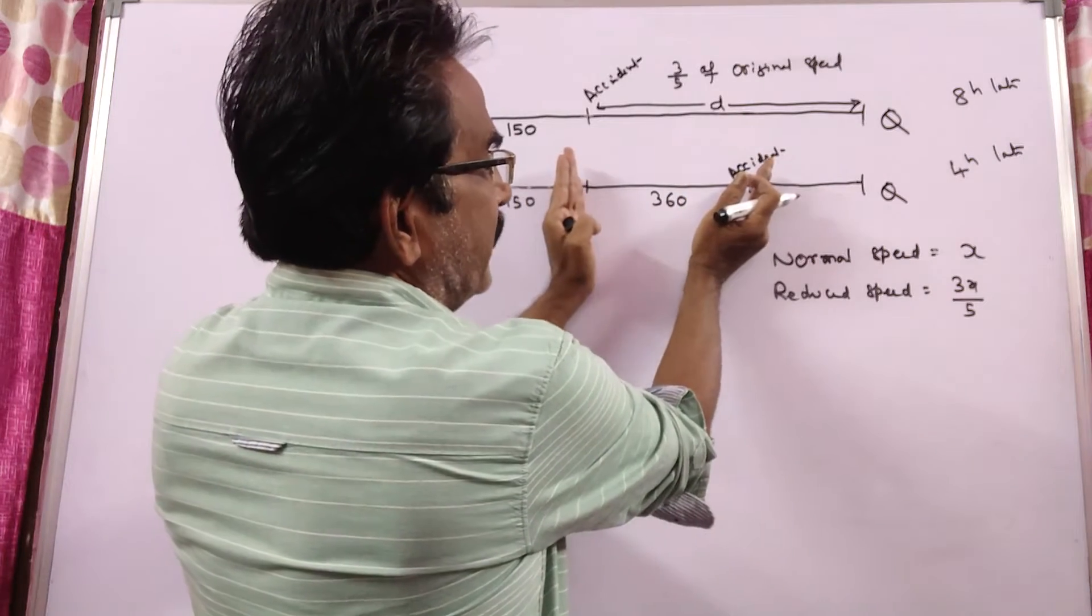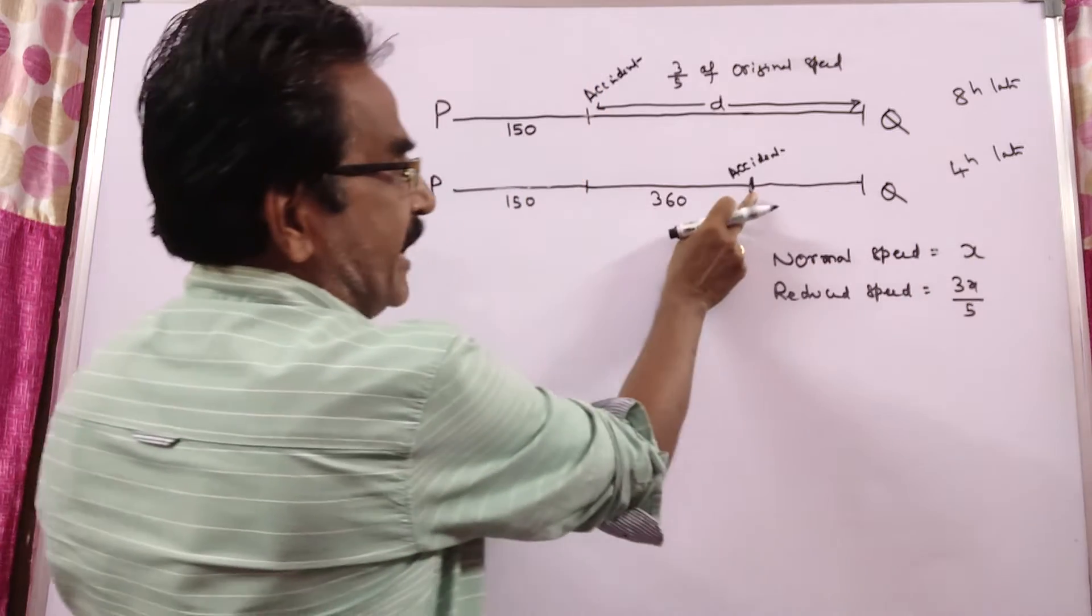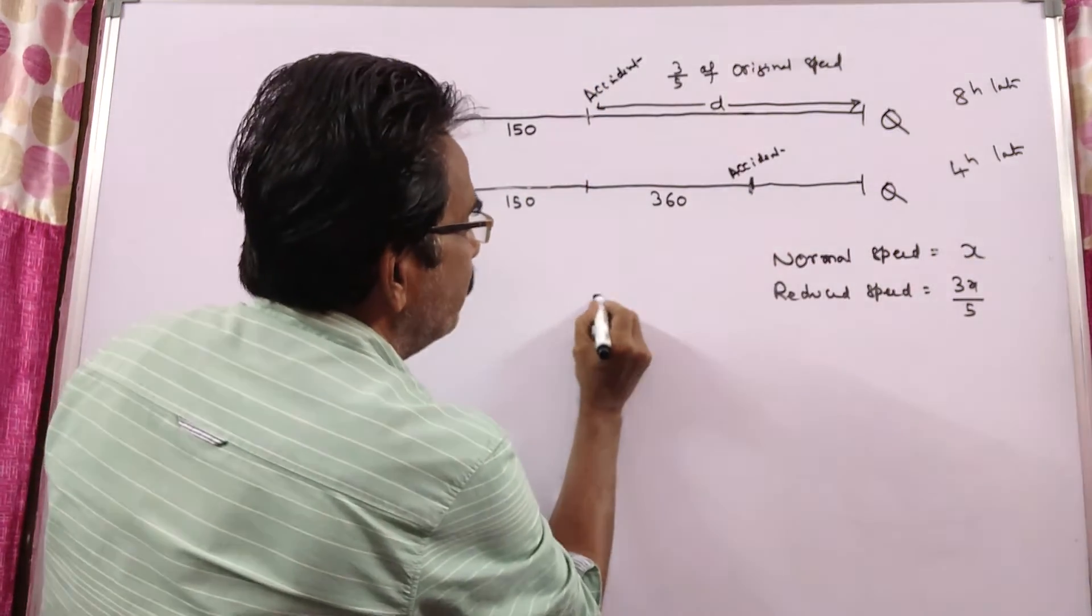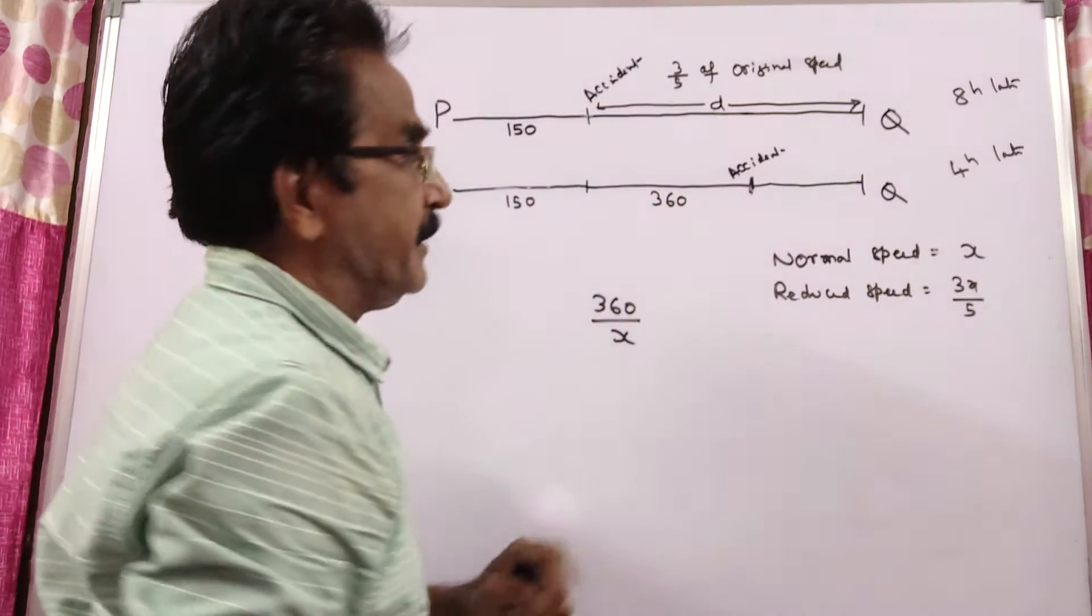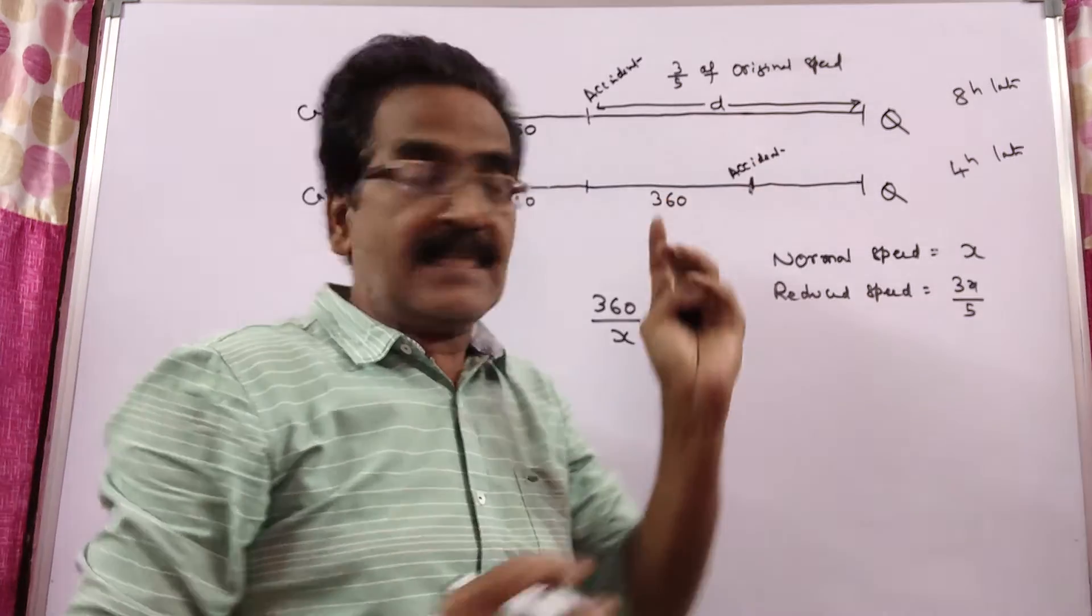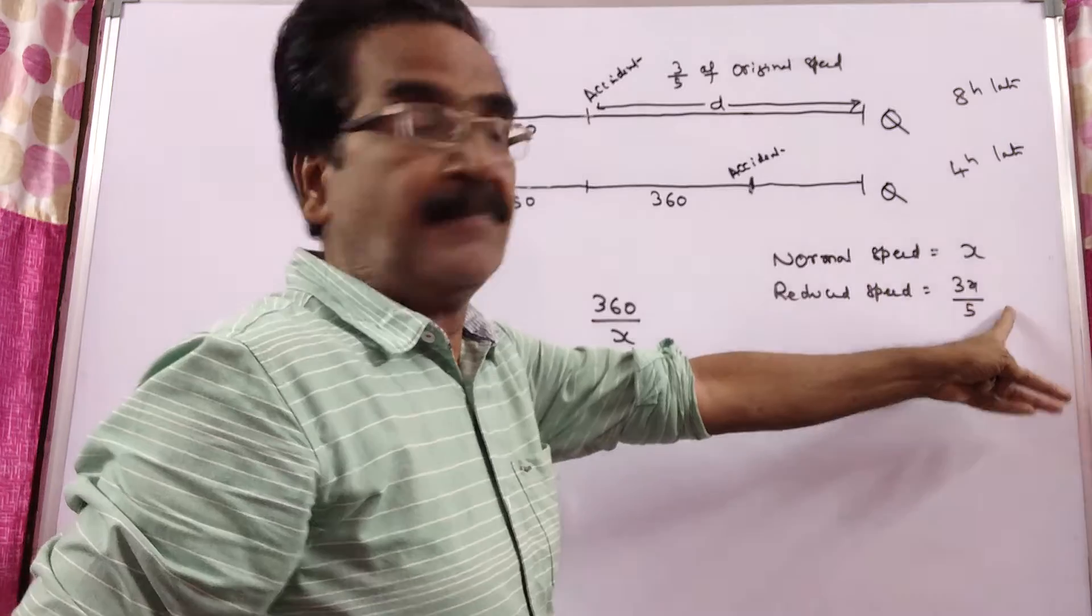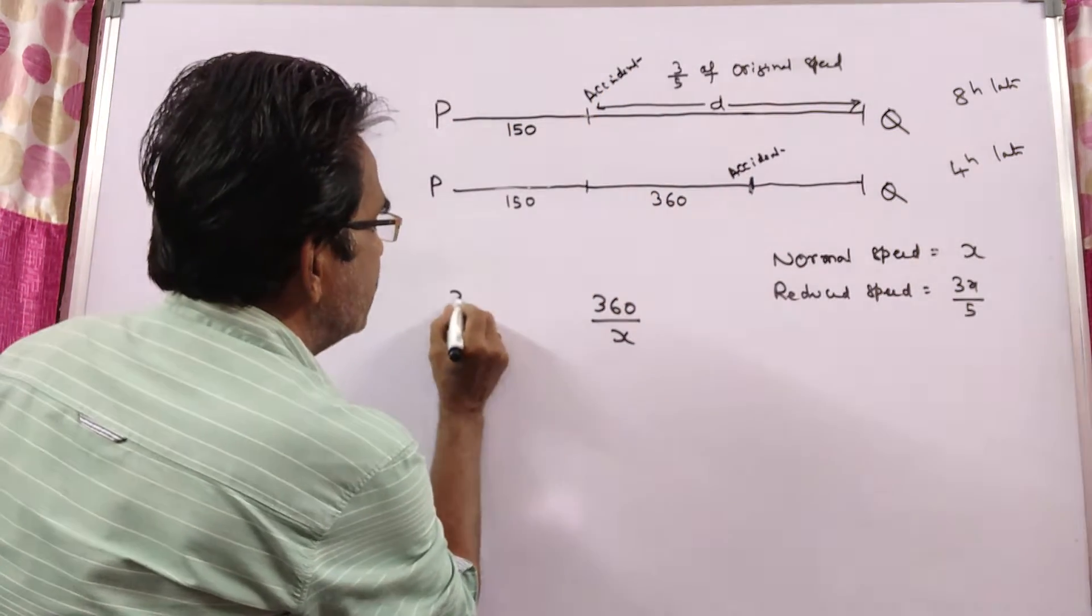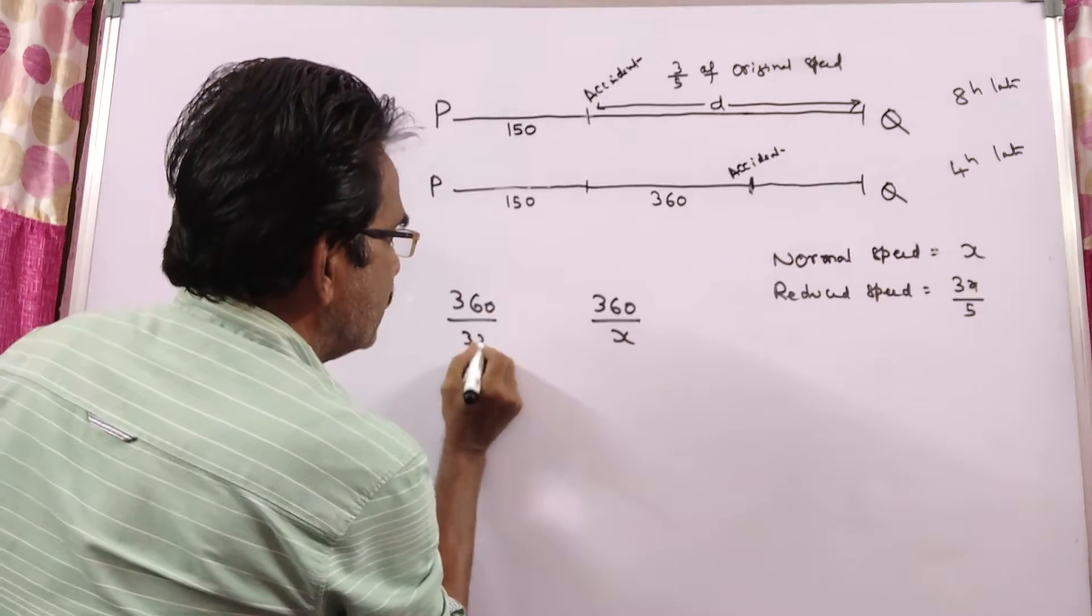So, 360 km with x km/h speed. Whereas in the first case, this 360 km travelled with reduced speed because the accident occurred here itself. So, 360 km with reduced speed, 3x/5.